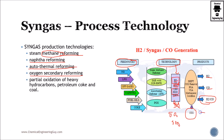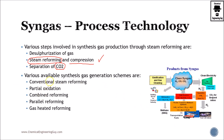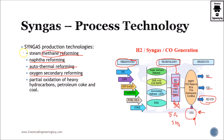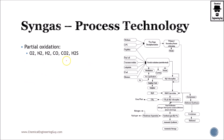CO₂ must be separated because it is not a fuel — it cannot be further oxidized or burned. There are various available synthesis gas configurations: conventional, partial, combined, and parallel gas setups. This is just an overview; we are going to be analyzing each of these in detail.